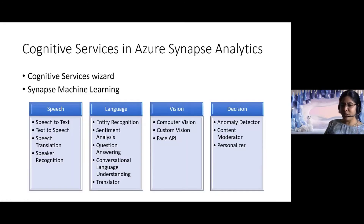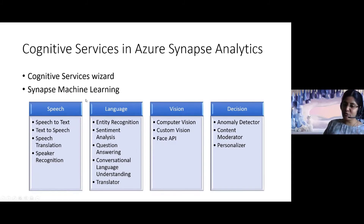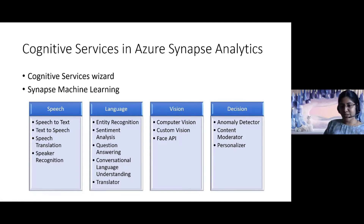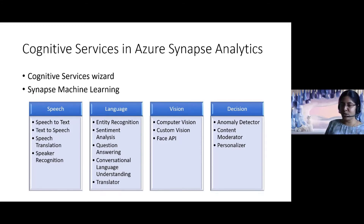When we talk about cognitive services in Azure Synapse Analytics, Microsoft has classified them into different categories. You have the speech category with APIs for converting speech to text, text to speech, translation of speech into different languages, and speaker recognition — with voice identification you can easily identify who the speaker is.